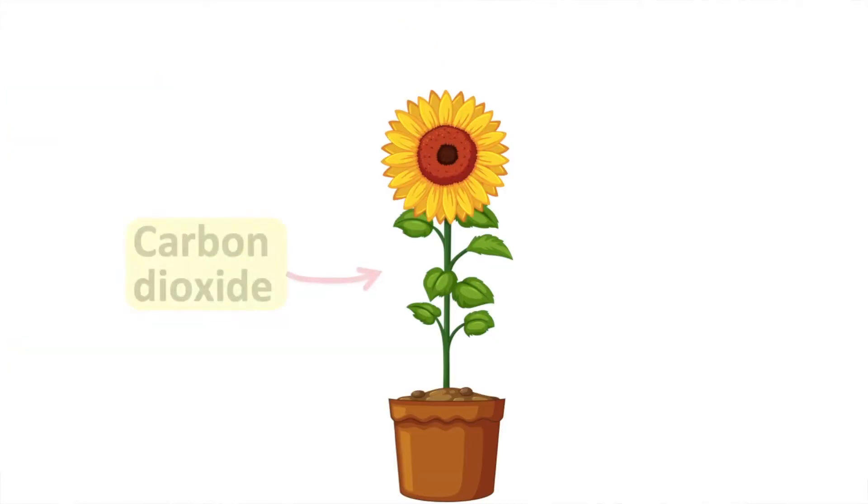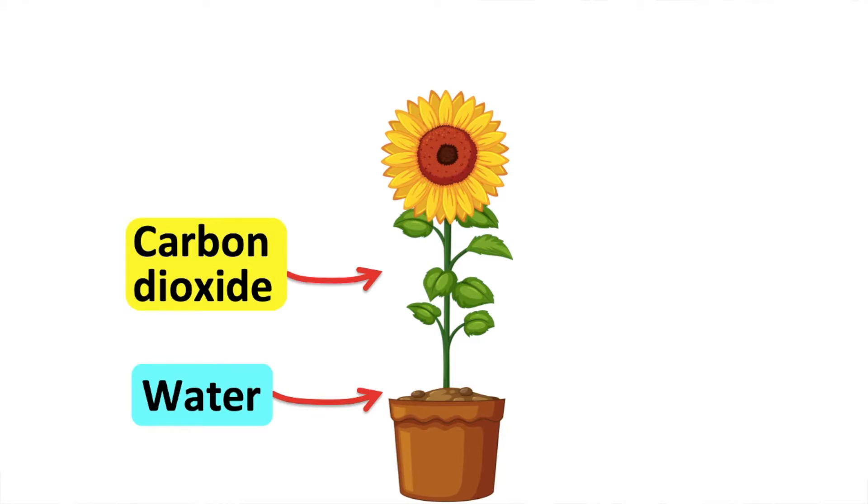Firstly, carbon dioxide and water enter the leaf. Carbon dioxide enters through the stomata of the leaf via diffusion. Water is absorbed by the roots from the soil. This water is then transported to the leaves by the xylem vessels.